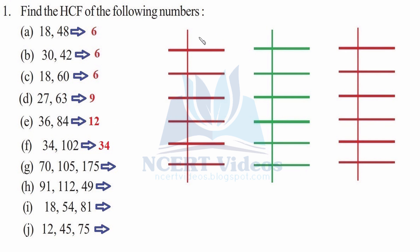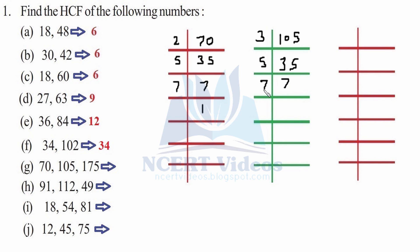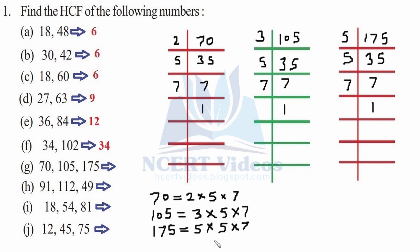Part g: three numbers — 70, 105, and 175. For 70: 2×35, 5×7. For 105: divided by 3 gives 35, then 5×7. For 175: divided by 5 gives 35, then 5×7. Looking at the prime factors, 5 and 7 are clearly common to all three numbers. So the HCF is 5×7 = 35.